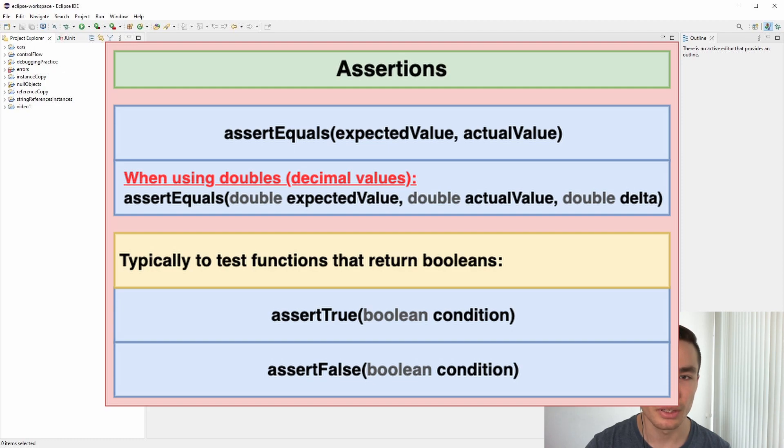The order of the arguments passed to assertEquals is important as it determines how the failure trace is displayed. The first argument should be the expected outcome and the second argument should be the actual outcome, so that the failure trace clearly indicates which value was expected and which value was the actual result.